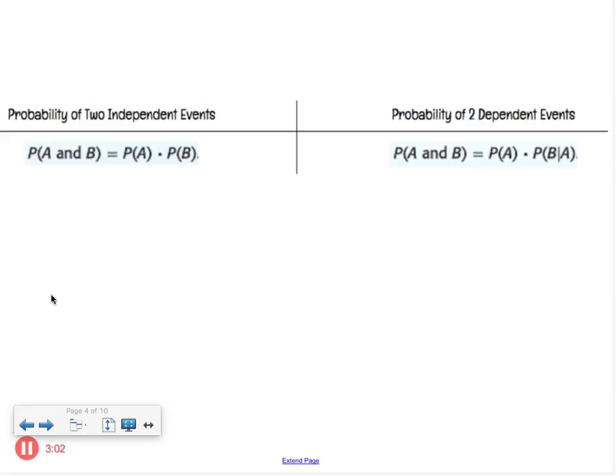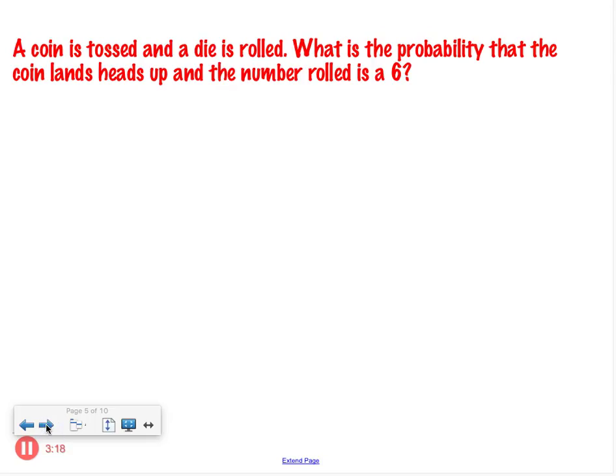For the dependent, it's the same idea. So you take the probability of your event A, and then you have to figure in what's going to change in B, and then multiply those. Okay. I don't really like formulas, I think they're more confusing than what they really are, so we'll jump into some examples.